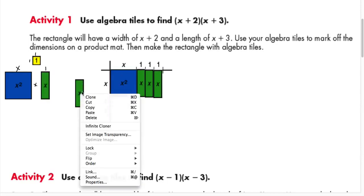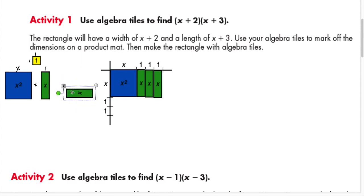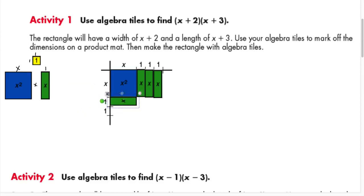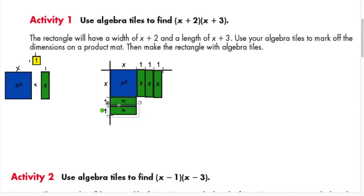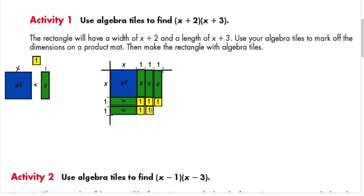Now we lay the x tiles down for the left column. x times 1 gives an x tile, lie it down. x times 1 again is another x tile, lie it down. Then 1 times 1 gives a unit tile. 1 times 1 is 1; we fill in all six unit tiles in the bottom-right section.